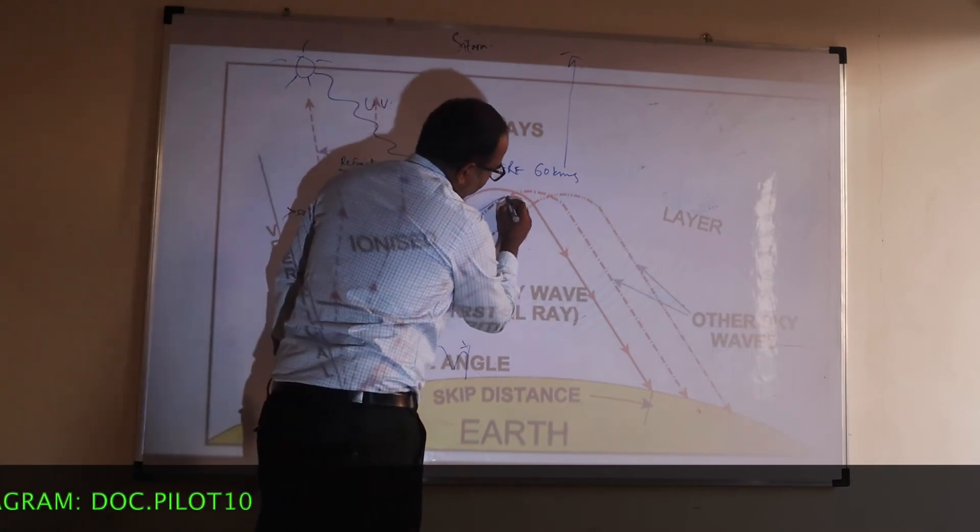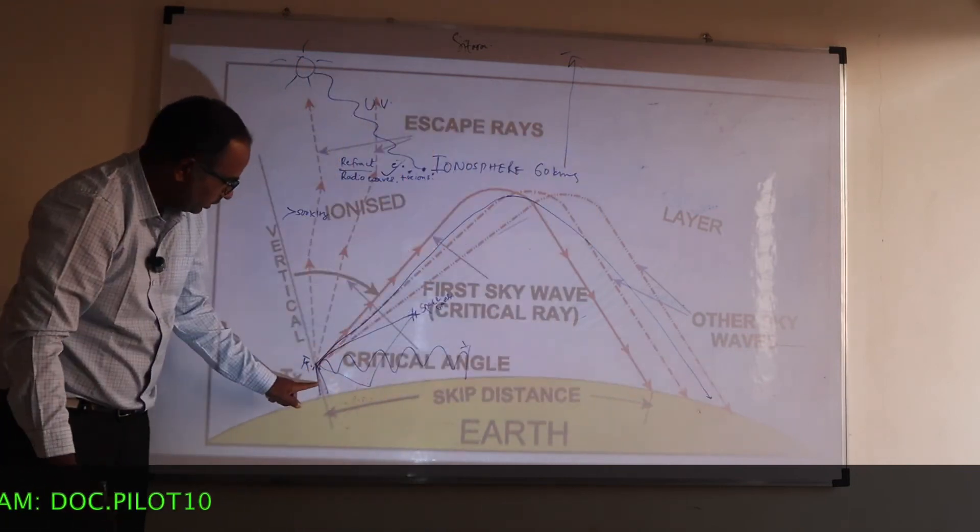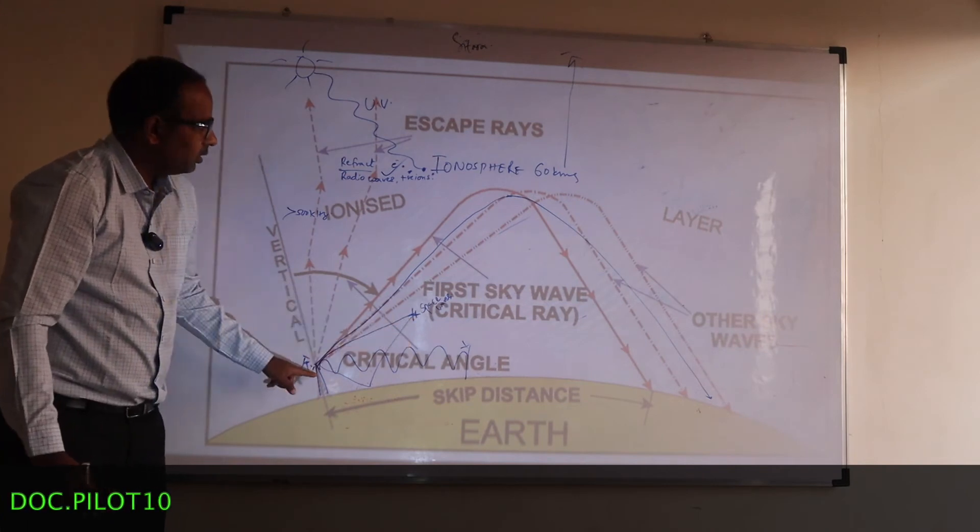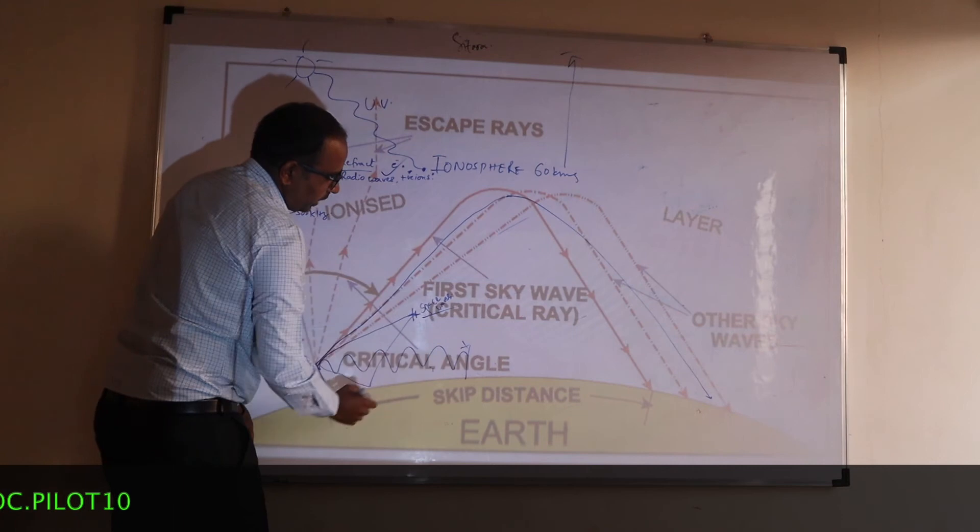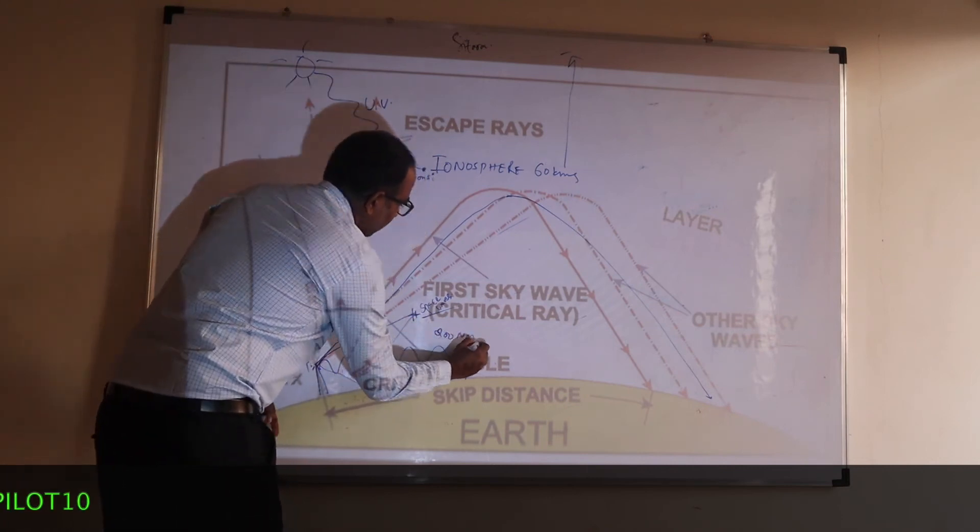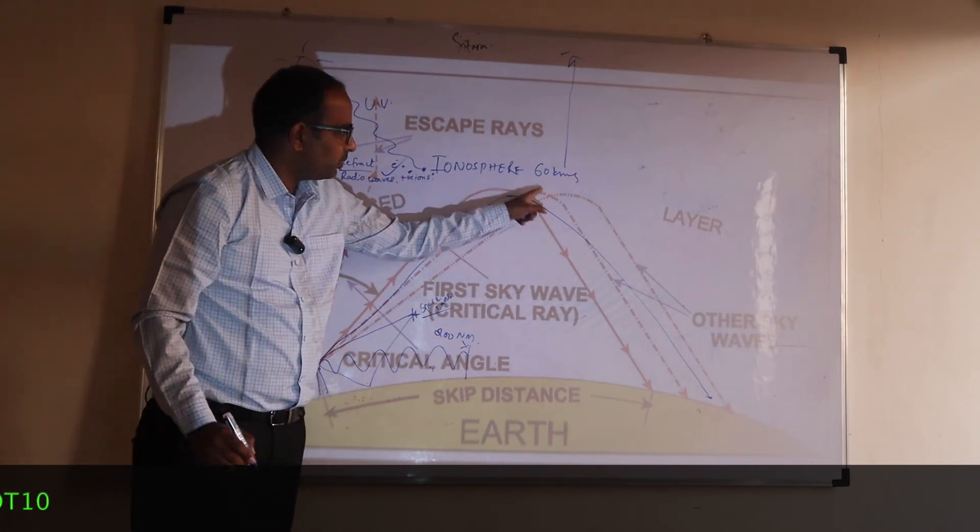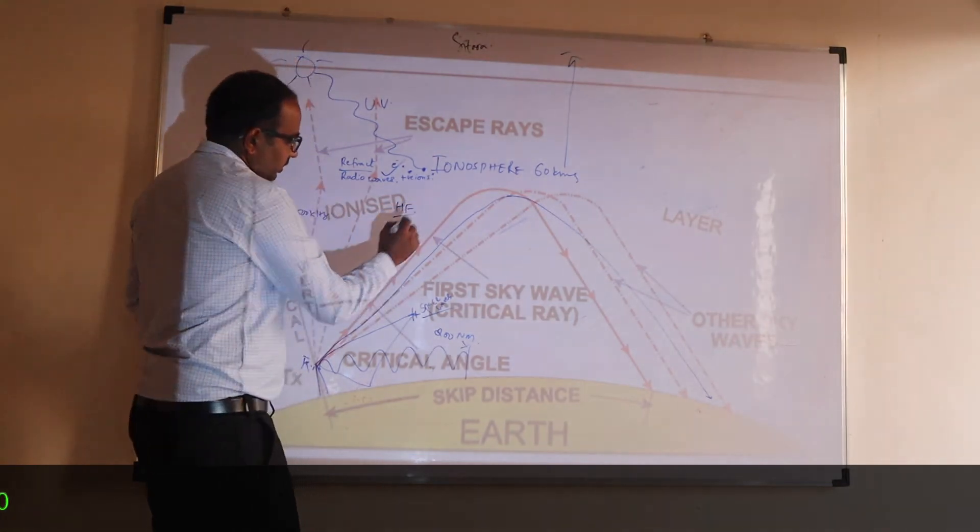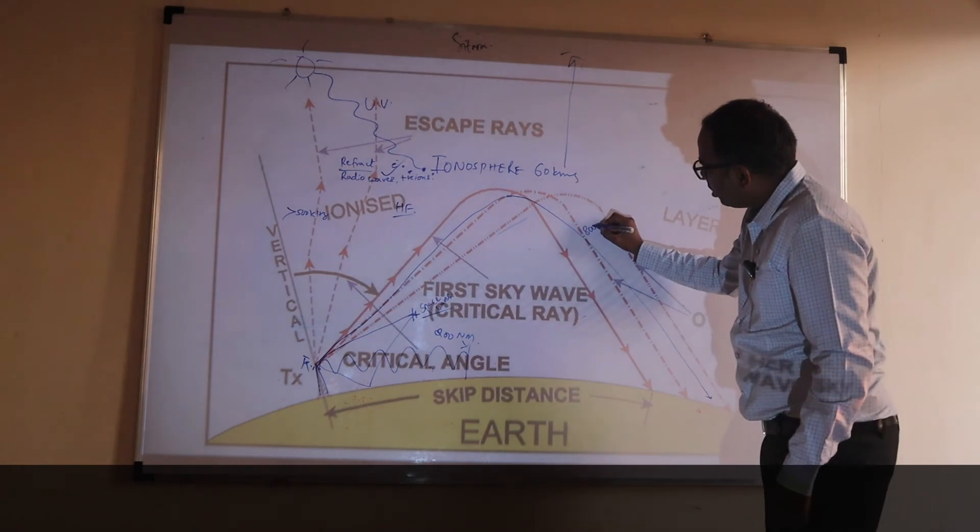See, the surface wave could travel only till here. The space waves could travel only till here. But, for example, the surface waves are used in NDB. Maximum range of NDB is 200 nautical miles. Sky waves are used, I mean, these waves which are refracted from the ionosphere are used in HF communications. The range of this HF communications is around 800 nautical miles.